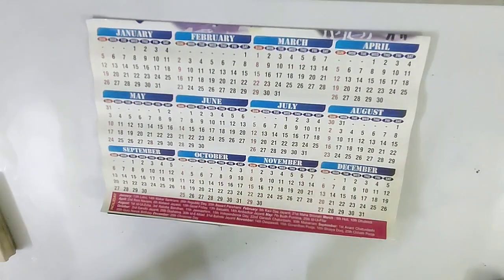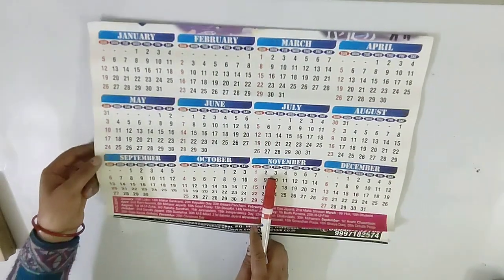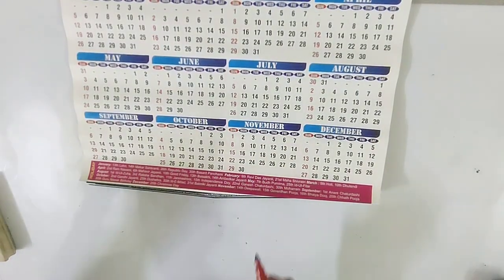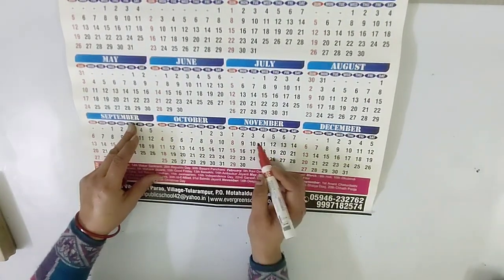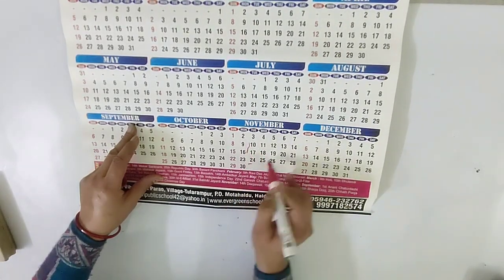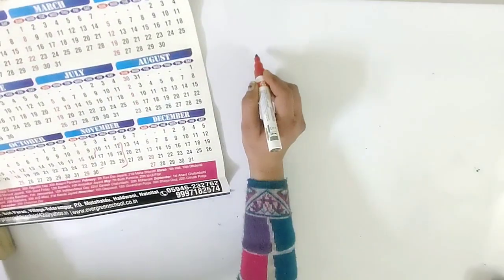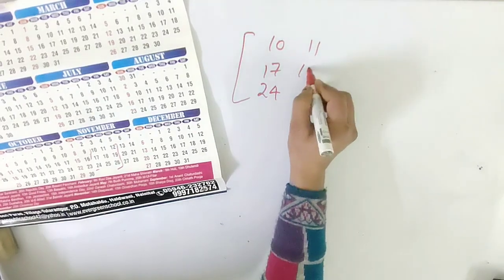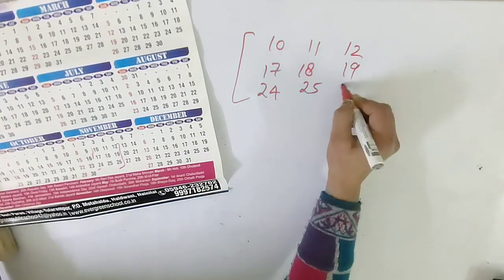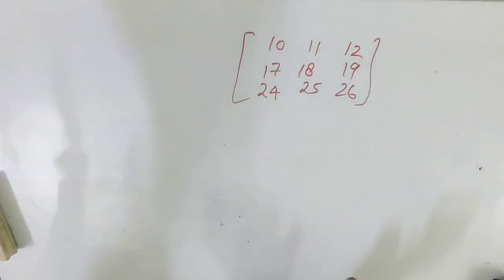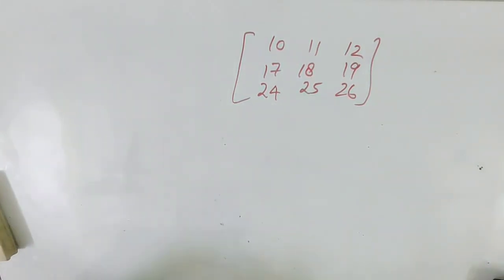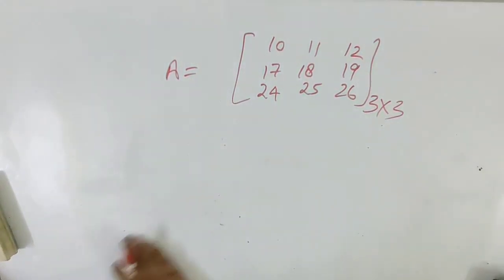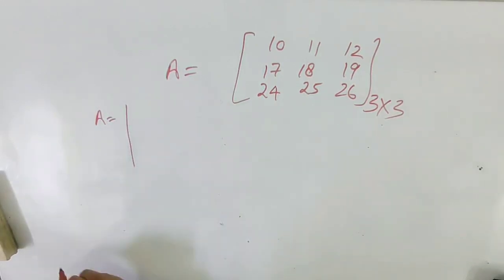Now let us discuss Case 2. I am going to take a matrix from a calendar — this is the year 2020. I can take any month; let me take a specific month and construct a matrix of order three by three. I select a 3×3 block from the calendar. The matrix I am taking has entries: 10, 17, 24 / 11, 18, 25 / 12, 19, 26. This is matrix A of order 3 by 3.